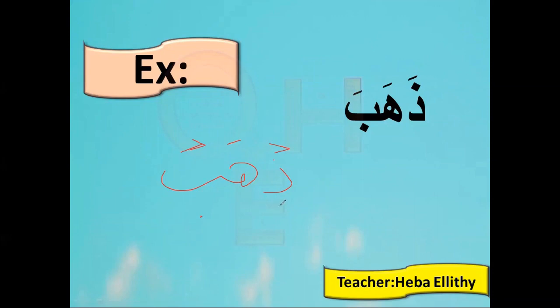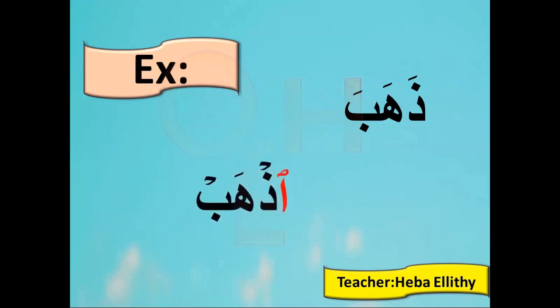In Arabic, you can't start with a Sukun at all. Arabs cannot start with a Sukun — it is not in their language. So how can they start in this case? They put Hamzat al-Wasl to make it like a stair to avoid this Sukun. So it will be Izhaab. Without this Hamzat al-Wasl, I would have a Zal-Sakina at the beginning, and Arabs never start with Sukun — it is very difficult for them.